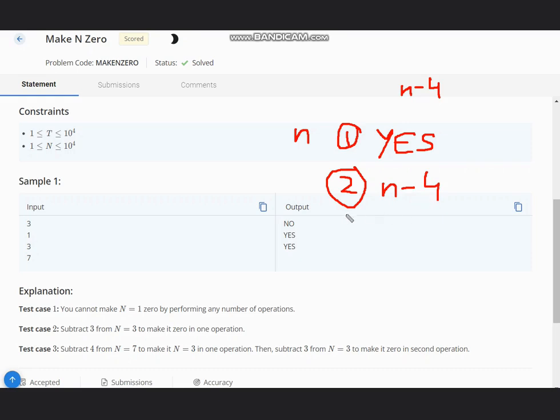And if N minus 3 is divisible by 4, then we subtract 3 from it. Or else also we can subtract 3, because the last condition is this one.